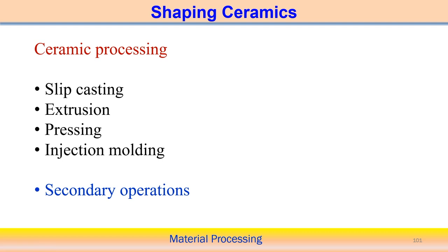Overall, ceramic processing involves different steps: slip casting, extrusion, pressing, and injection molding are the four main forming techniques, along with secondary operations. This was an overview of different ceramic materials and the techniques to follow for processing them. In the next class, the processing techniques will be discussed in detail. Thank you very much for your kind attention.